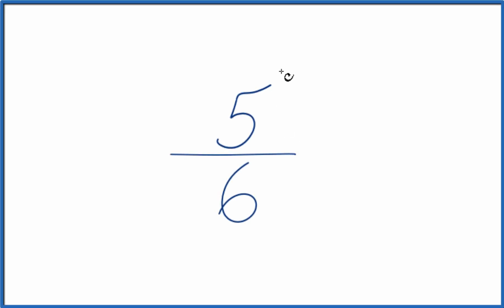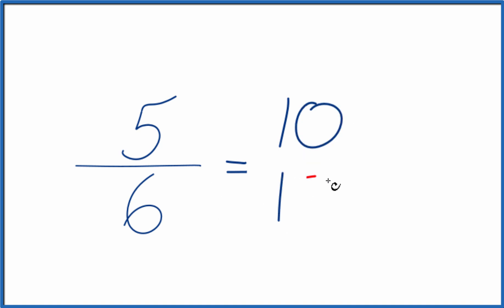Let's write some equivalent ratios for 5/6. Here's how we do it. We want to multiply the numerator and the denominator by the same number. So let's multiply 5 times 2 and then 6 times 2. 5 times 2 is 10. 6 times 2 is 12.